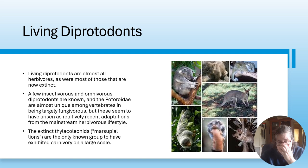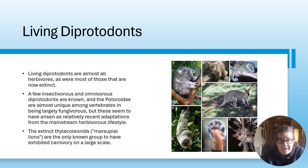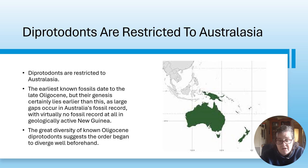Living diprotodontians are almost all herbivores, as were most of those now extinct. A few insectivorous and omnivorous species are known. Potoroidae are most unique amongst vertebrates in being largely fungivorous, meaning fungus-eating, but they seem to have arisen as adaptations from the mainstream herbivore lifestyle. The extinct thylacoleonids, or marsupial lions, are the only large group to have exhibited carnivory on a large scale.